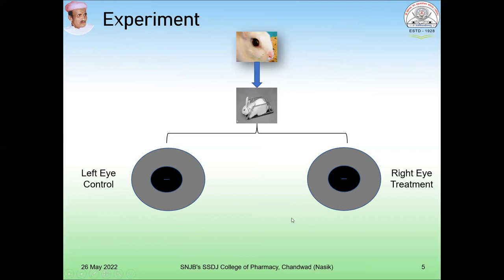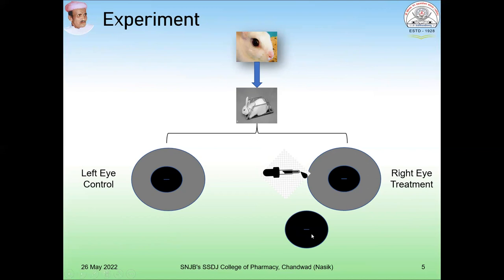You can test any number of drugs by putting a drop of the drug into the eye. Two conditions will happen: if the drug has the potential to produce mydriasis, there will be dilation of the pupil; if it produces constriction of the pupil, it may produce miosis.